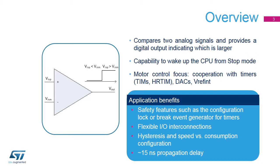Up to 7 analog comparators inside STM32 microcontrollers provide a binary output which indicates if the analog voltage on the plus input is larger than the voltage on the negative input. It allows the MCU to react when the analog signal crosses a predefined threshold. The comparator continuously monitors voltage, in contrast to an analog-to-digital converter which operates in sampled mode. The comparator can also be used to wake up devices from sleep and stop modes.